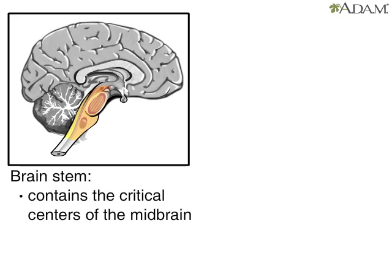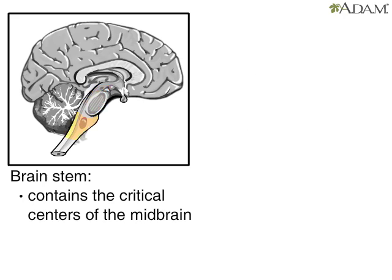The brainstem is located underneath the temporal lobes and extends down to the spinal cord. It is critical for survival because it connects the brain with the spinal cord. The top portion of the brainstem is called the midbrain, a small portion located at the top of the brainstem. Just below the midbrain is the pons, and below the pons is the medulla. The medulla is the part of the brainstem closest to the spinal cord, and lies deep within the head, where it is well protected from injuries by an extra-thick section of overlying skull.